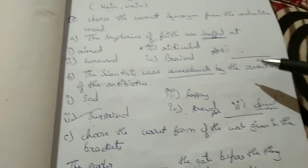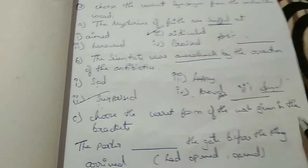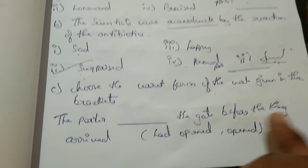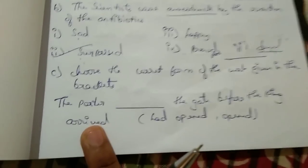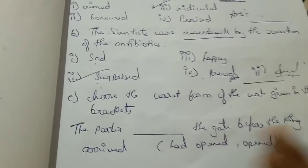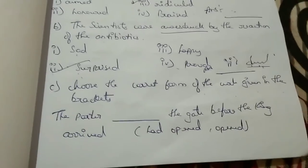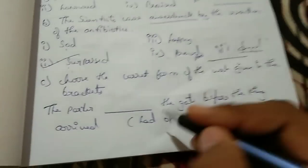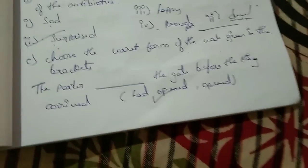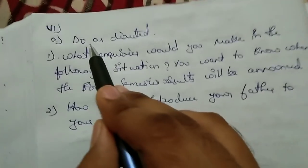Choose the correct form of the verb given in the bracket. You should first learn and understand the sentence. For example: 'The porter dash the gate before the king arrived.' Since the king had already arrived, you need the past perfect — 'The porter had opened the gate before the king arrived.' So the answer is 'had opened.' First understand the sentence, then choose the answer; don't just write something randomly.